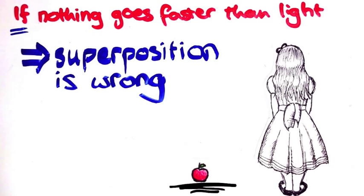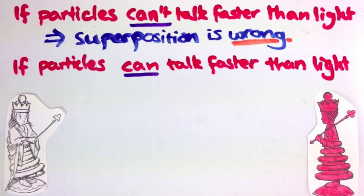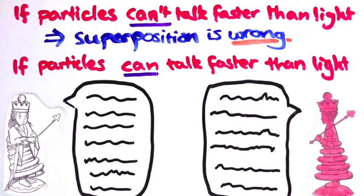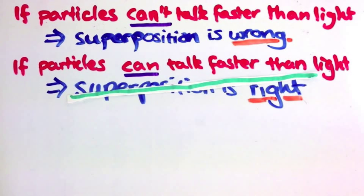What about the other possibility? What if entangled particles do talk faster than light to each other? This is where lots of people get it wrong, so I urge you to be careful. If entangled particles do talk faster than light to each other, that doesn't necessarily imply that superposition is right.